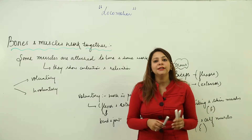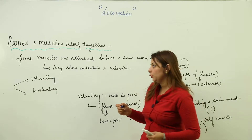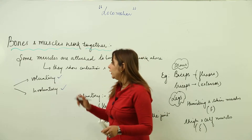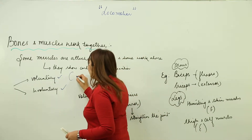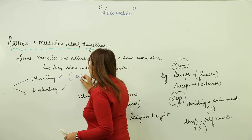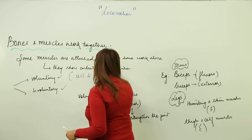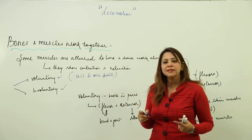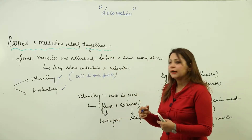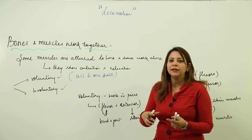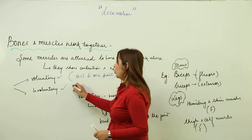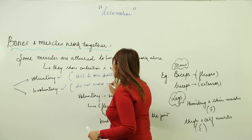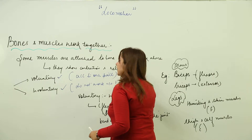There are basically two kinds of muscles in the body: voluntary and involuntary. Voluntary muscles are those which work according to our will — they can contract or relax according to our need, whenever we want to use them.